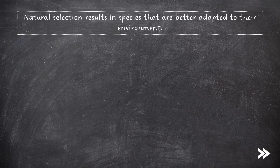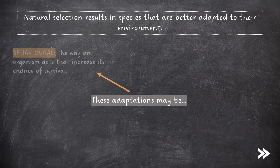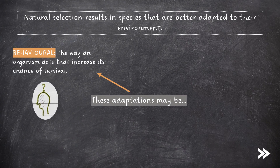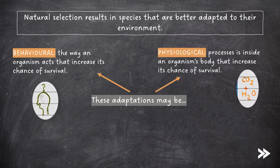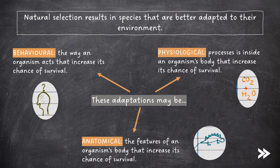Note that natural selection results in species that are better adapted to their environment. These adaptations may be behavioural — this is the way an organism acts that increases its chances of survival. They may be physiological, which are the processes inside an organism's body that increase its chances of survival. And finally, adaptations may be anatomical, which are the features of an organism's body that increase its chances of survival.